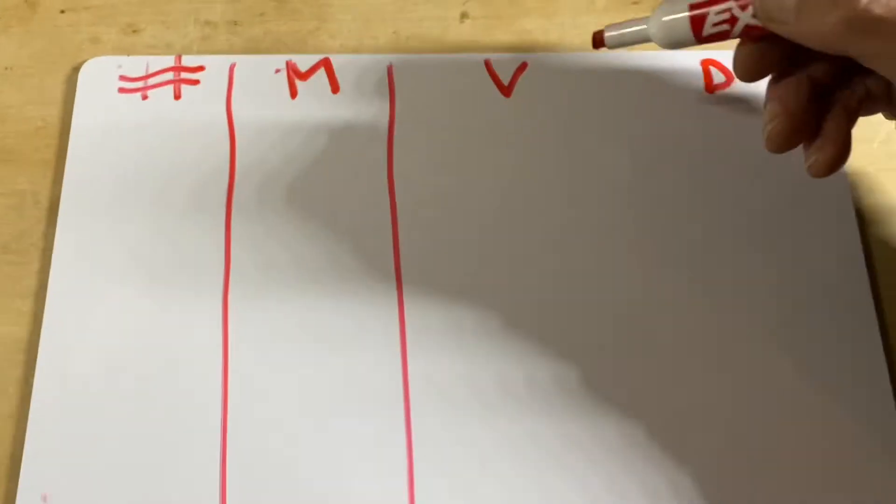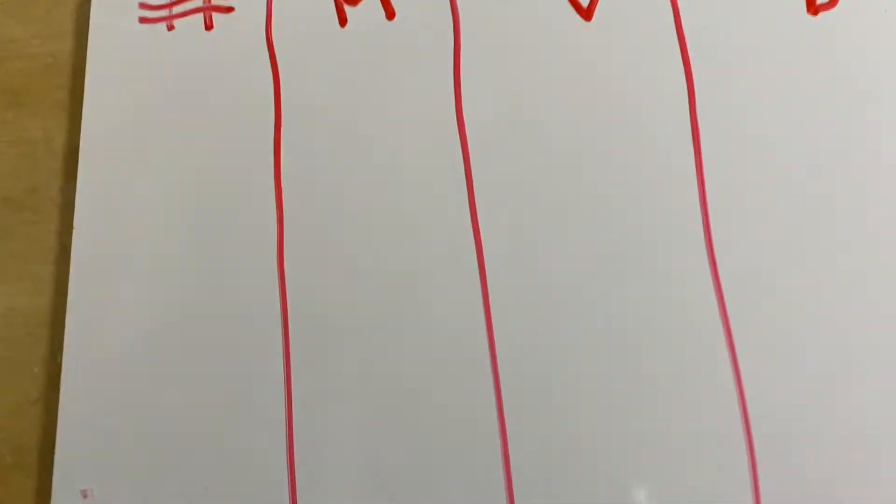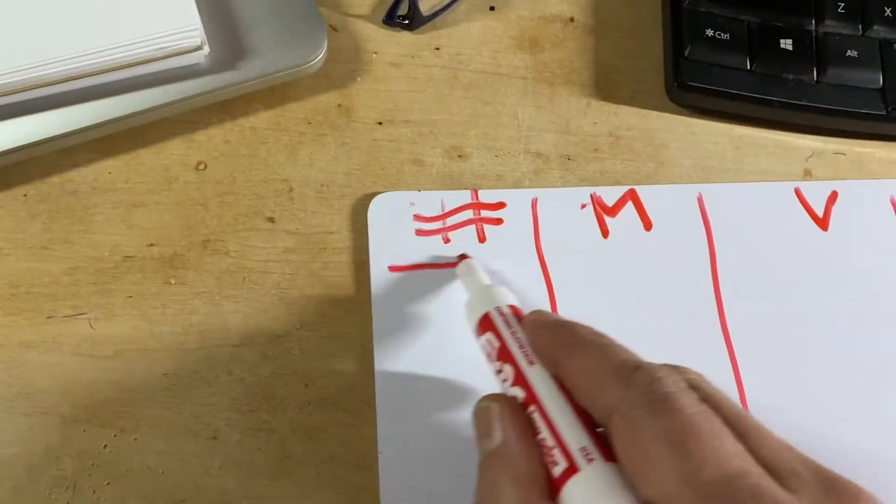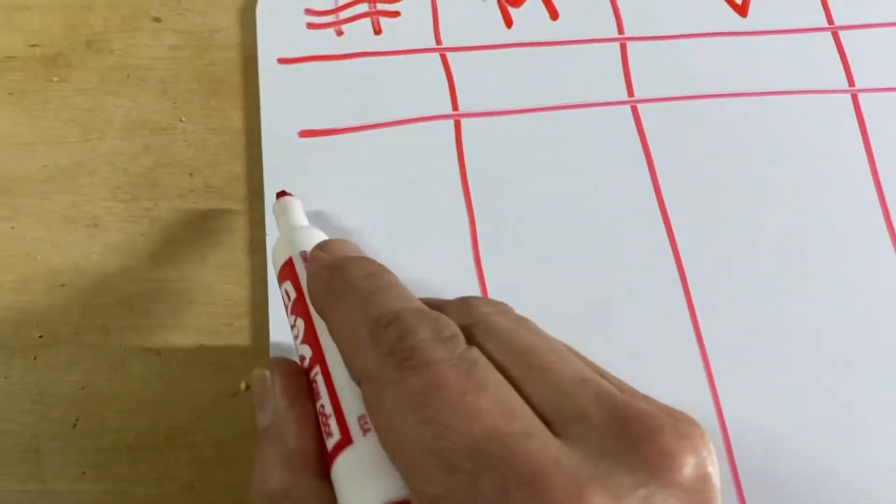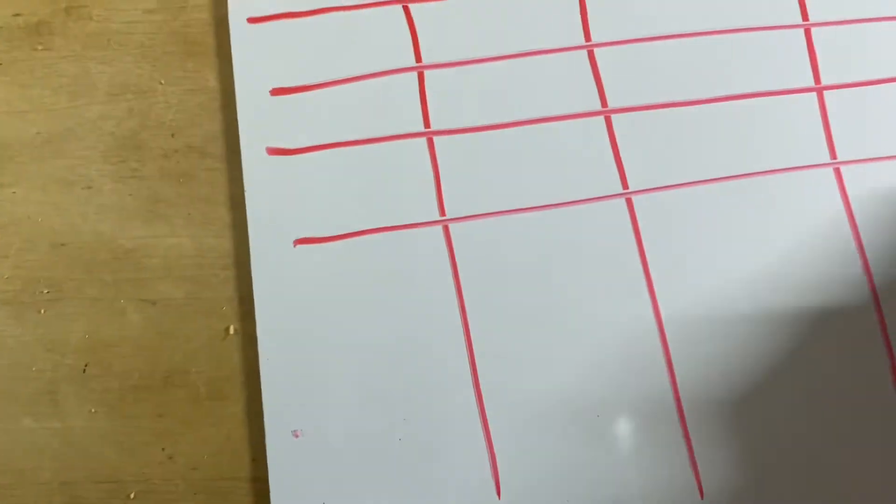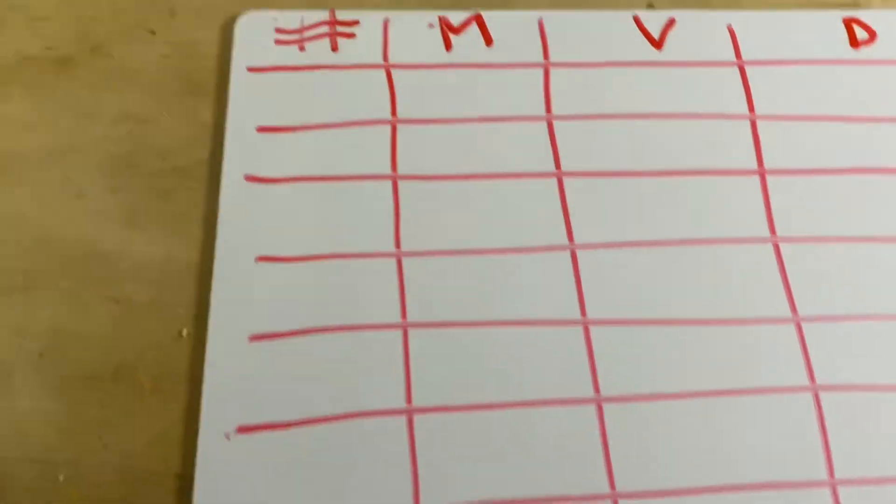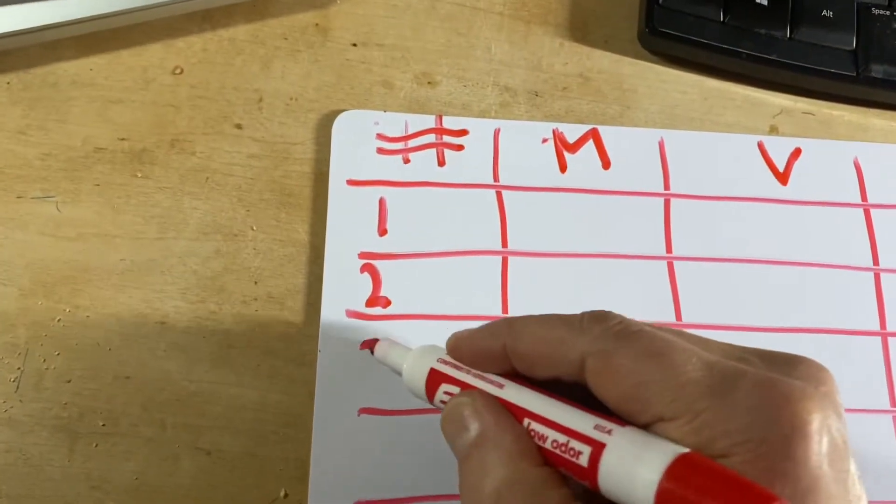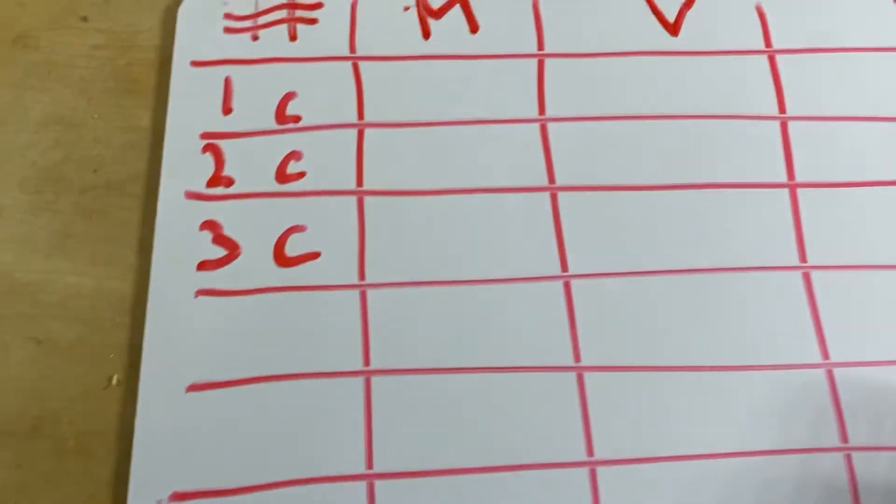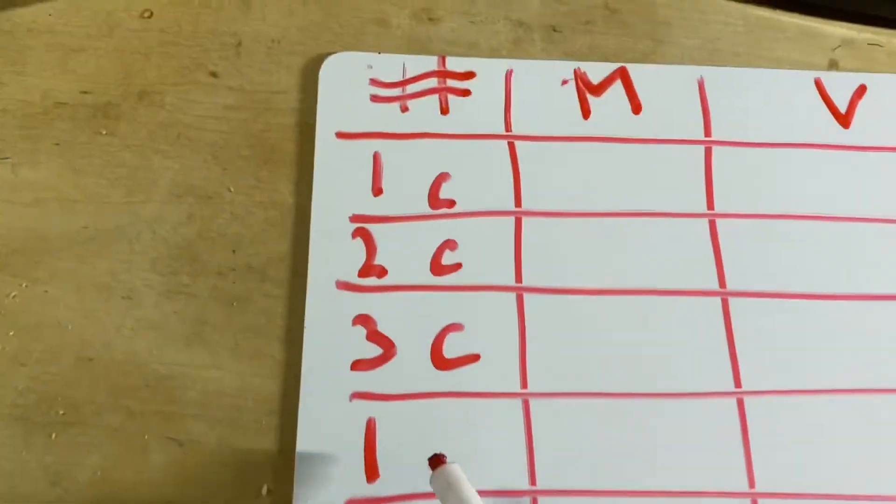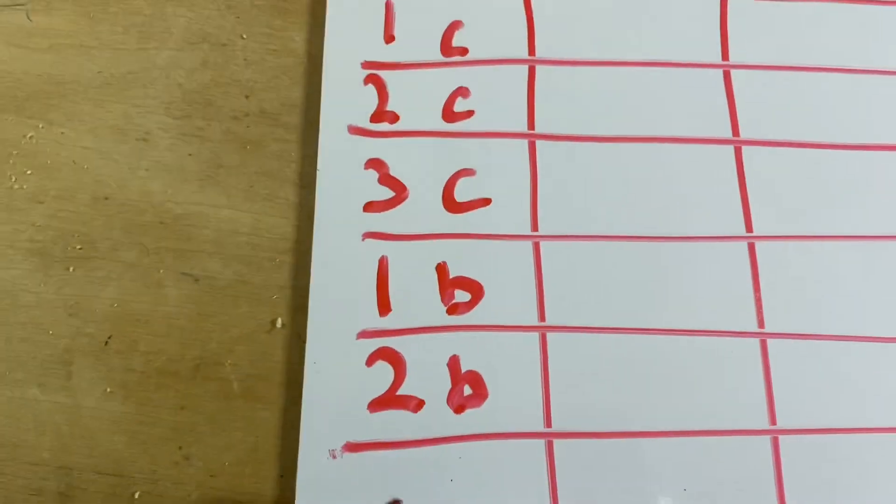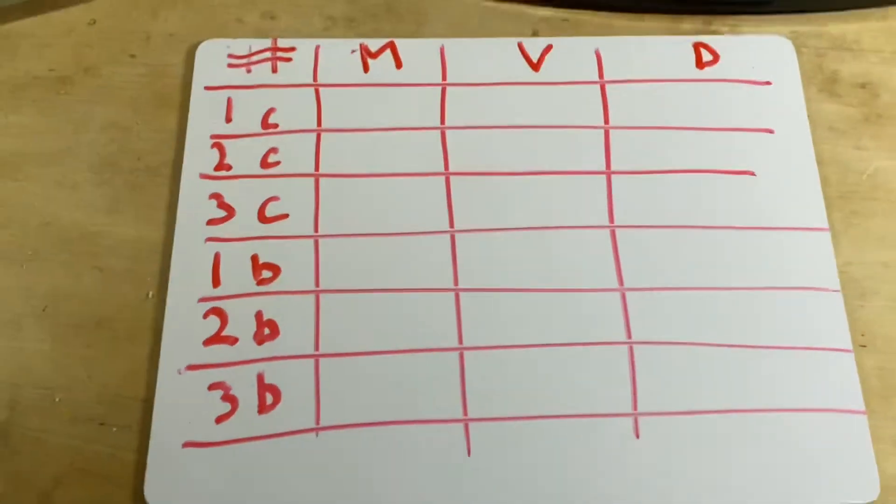Draw lines down to make the three columns like that and then we'll draw lines across. They don't have to be straight to make room for six objects. The first three objects are cylinders so we're going to represent those as 1C, 2C, and 3C. The other objects are blocks so we're going to represent those as 1B, 2B, and 3B.